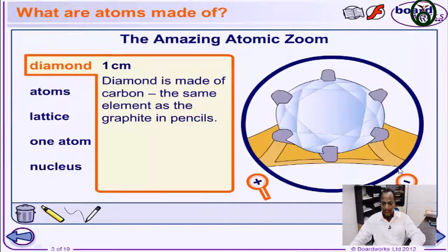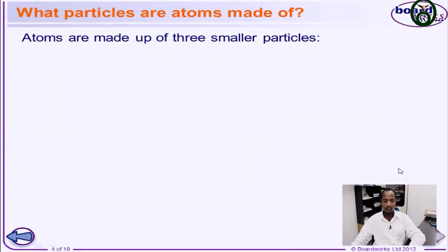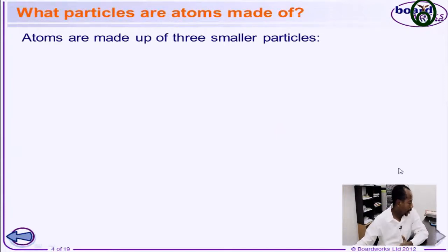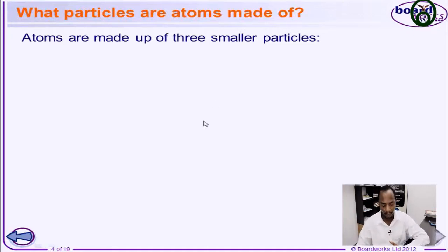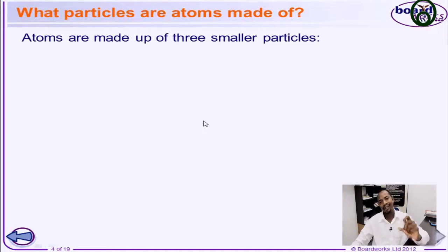Now before we talk about an atom, we have to understand the meaning, the ordinary meaning of an atom. What is an atom? An atom is defined as the smallest particle of an element which can take part in a chemical reaction.